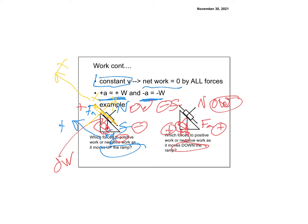For example, if the acceleration is zero, the work done by Fg plus the work done by Fa equals the work done by friction. If there's acceleration, one would be bigger and there'd be net positive or negative work. But a lot of times these problems have the object moving at constant velocity.